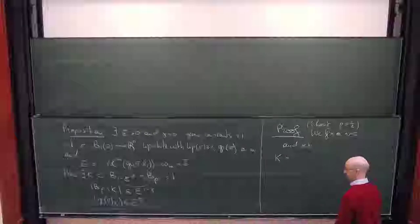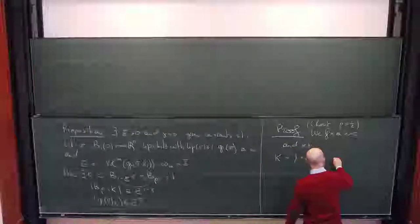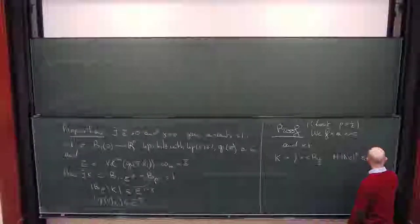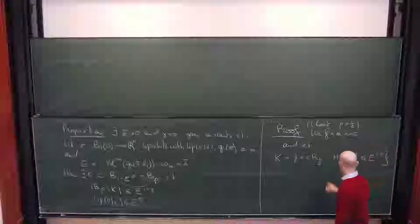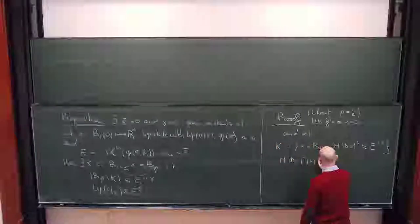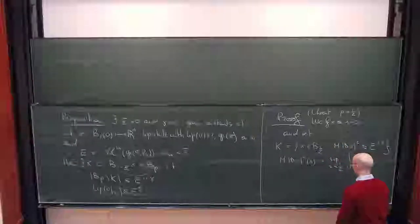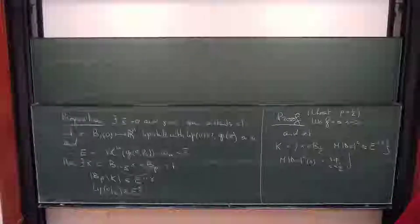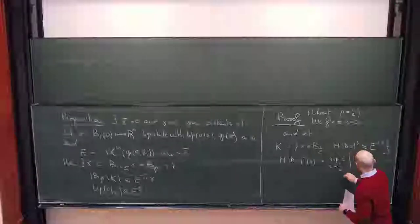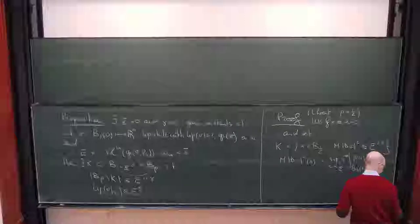We set K to be equal to the set of points X in the ball of radius one half where the maximum function of dV squared is less or equal than E to the power 2 lambda. The maximum function M of dV squared at point X is by definition the supremum over all radii R less than one half of the integral of dV squared on the ball of radius R about X, multiplied by the appropriate normalization.